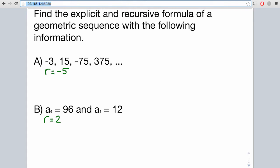To find the explicit formula, we will take our first term, which in this case is negative 3, and multiply it by the common ratio raised to the n minus 1 power.